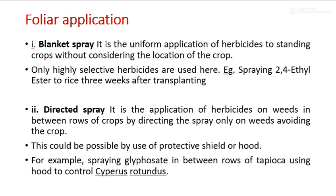The second application method is foliar application. First is blanket spray — the uniform application of herbicide to standing crops without considering the location of the crops. Only highly selective herbicides are used here. Example: spraying 2,4-D ethyl ester on rice 3 weeks after transplanting. Selective herbicides are mostly used in this type of application.